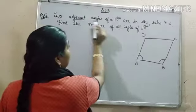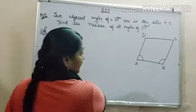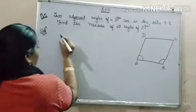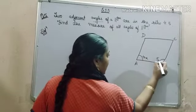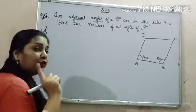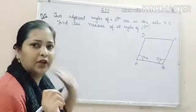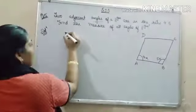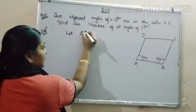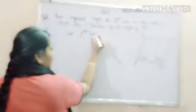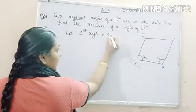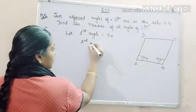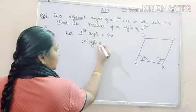Here adjacent angles are given to you. So let it be 4x and let it be 5x. I have told you whenever ratio is given to you, just let the values as first angle equals 4x, second angle equals 5x.